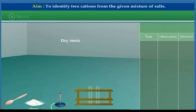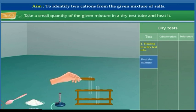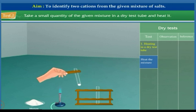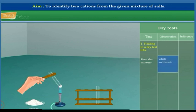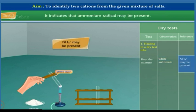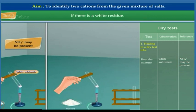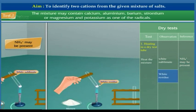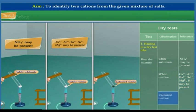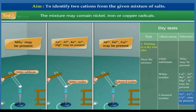Now we shall perform the dry test. Test 1: Heating in a dry test tube. Take a small quantity of the given mixture in a dry test tube and heat it. If a white layer is formed on the upper cooler part of the test tube, it indicates that ammonium radical may be present. This white layer is called the white sublimate. If there is a white residue, the mixture may contain calcium, aluminium, barium, strontium or magnesium. If there is a colored residue, the mixture may contain nickel, iron or copper radicals.